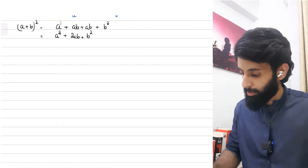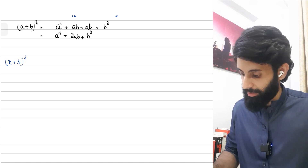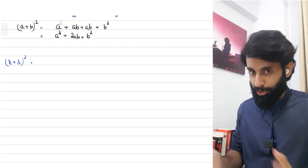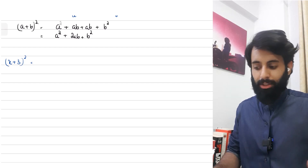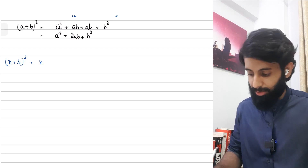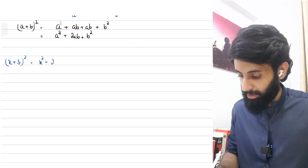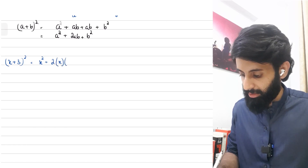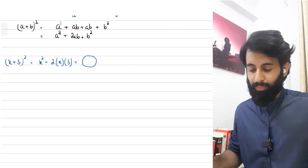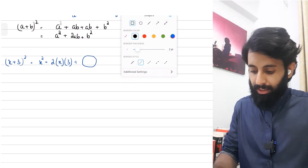Now let's look at (x + 3)². We all should know this equals x² + 6x + 9 — and for goodness' sake, it's not x² + 9. I've seen a lot of students make that error. So we have x² + 2·x·3 + 3², and this is the point where you'll understand why it's called completing the square.